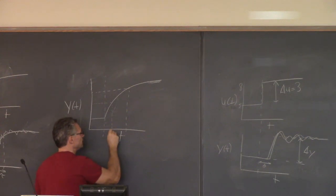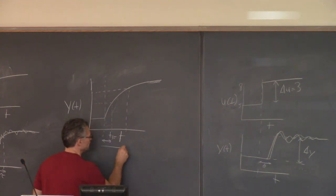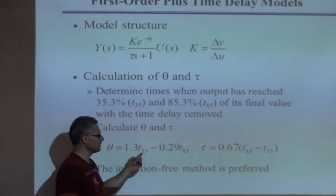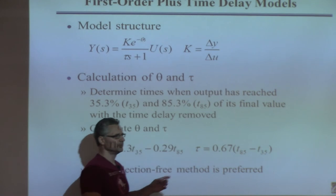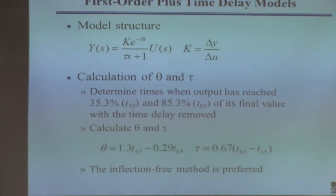So then you come down here and find these two times: T35 and T85. The difference between when you found this and when the output actually started to change - that's what it means by time delay removed. To find the value of the time delay theta, use those two values in this equation: θ = 1.3t35 - 0.29t85. To find the time constant tau, use the two values in this equation: τ = 0.67(t85 - t35). These are common methods. You find the response, pick points off the response curve, and then estimate the parameters.